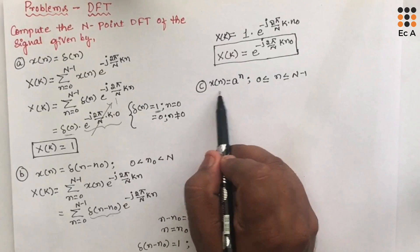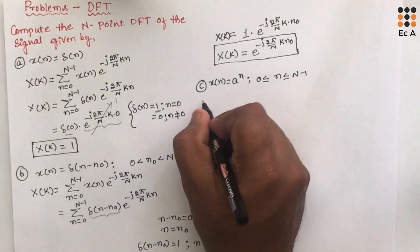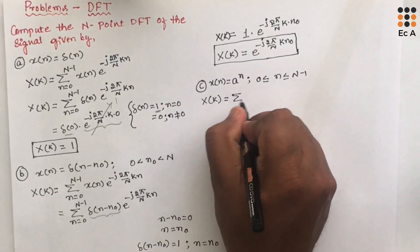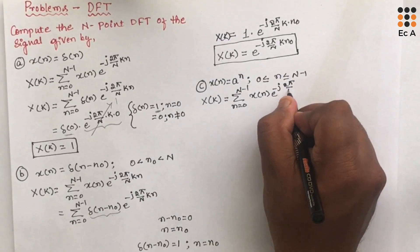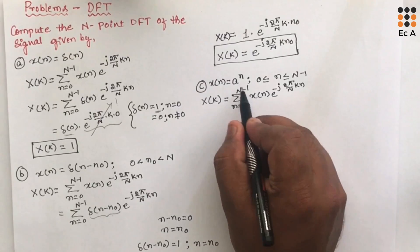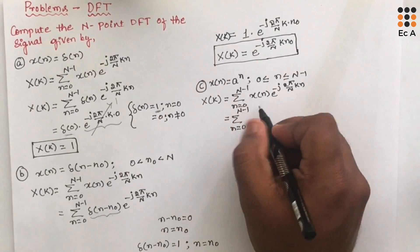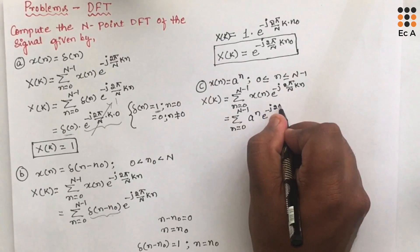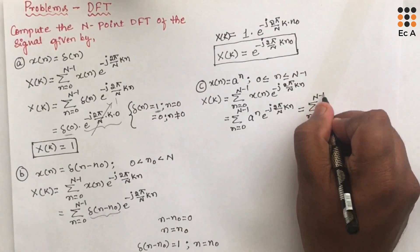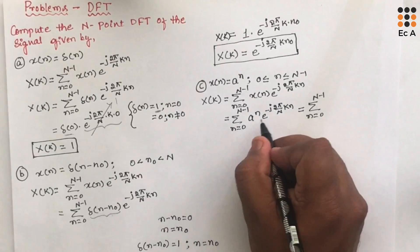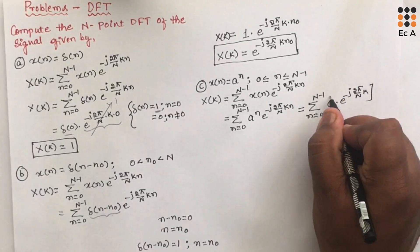Let us take the third problem where the signal is x(n) = aⁿ, with n ranging from 0 to N-1. Let us write the formula X(k) = summation from n=0 to N-1 of x(n) · e^(-j2πkn/N). Substituting x(n) = aⁿ, we get summation of aⁿ · e^(-j2πkn/N), which can be written as summation of [a · e^(-j2πk/N)]ⁿ.